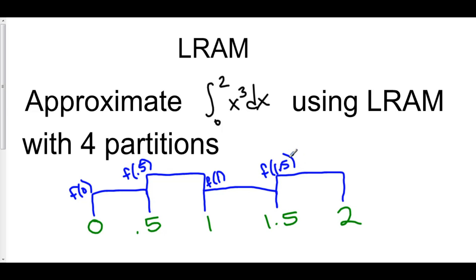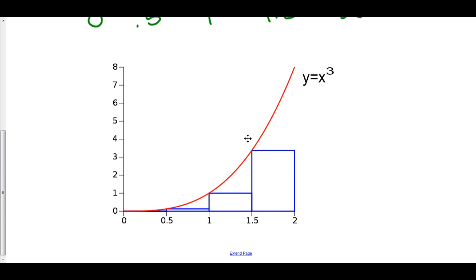So now we can actually figure out, using our formula or using the area of rectangles, what the approximation for this area is going to be. Now take a look at what this thing actually looks like. Just as we drew above, this is the graph of y equals x cubed right here, from 0 all the way up to 2.